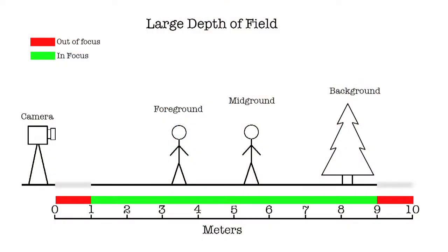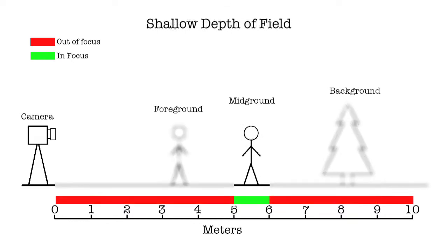A quick look at a couple of simple diagrams can make this much more clear. In this first example, we have a large depth of field — everything from about one to nine meters is in focus. Foreground, mid-ground, and background would all appear sharply in focus. In the second example, we have a shallow depth of field. Only a small portion — the mid-ground, from five to six meters — is in focus. Everything in front of and behind that would appear soft and out of focus.